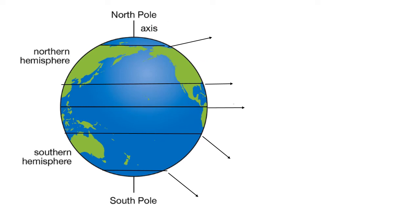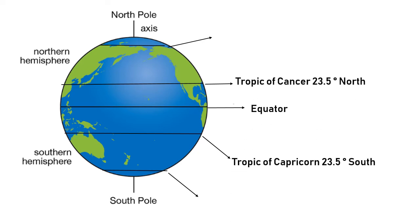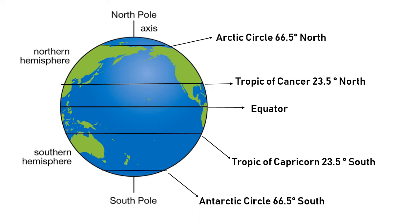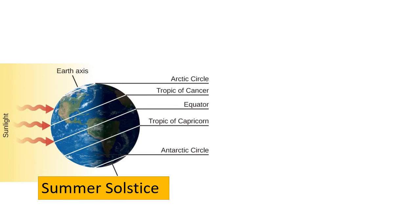Now let's revise the five major lines of latitude: Equator, Tropic of Cancer, Tropic of Capricorn, Arctic Circle, and Antarctic Circle. As shown in this image, the Sun is directly above the Tropic of Cancer, which usually falls on June 21st. This means this tropic is the farthest point north on earth where the Sun is completely overhead at noon.